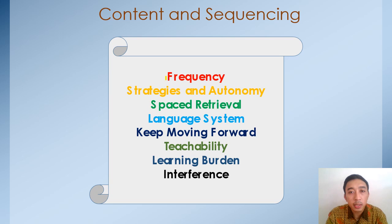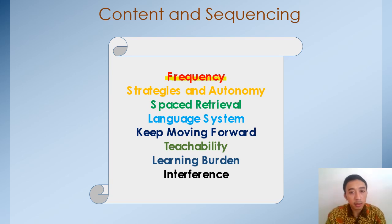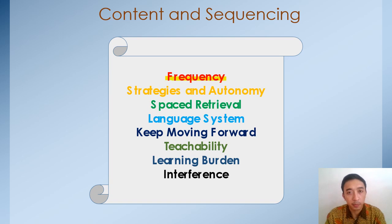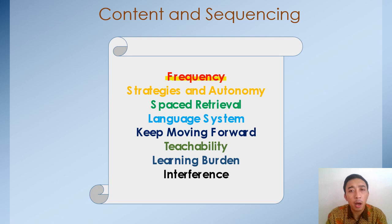The eight categories we have to consider in content and sequencing are: frequency, strategies and autonomy, space retrieval, language system, keep moving forward, teachability, learning burden, and interference. Let's discuss each one in content and sequencing.